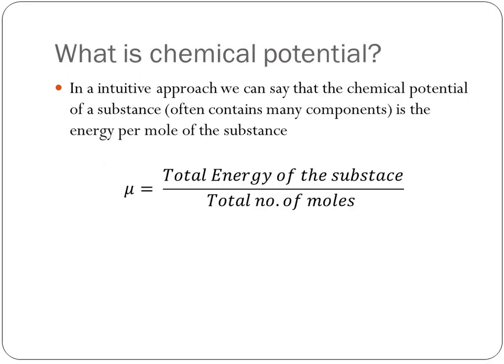What is chemical potential? In an intuitive approach, we can say chemical potential is the total energy of a substance per the total number of moles, that is kilojoule per kilomole.